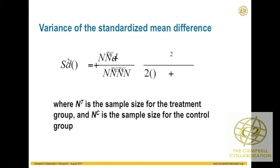This should look familiar. This is an experimental study. If we're interested in the difference between the treatment and control group, this is our standardized mean difference. As David said this morning, we usually use the letter D for that estimate. The numerator is the difference between the treatment and the control group, and the denominator is the pooled standard deviation across the two groups.